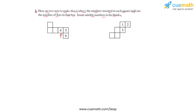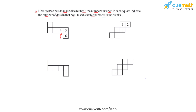We'll consider these nets and understand how they are folded to form cubes, so as to understand which would be the opposite faces of each other. Let us first consider this particular net and use the example of a cube-shaped room — with four walls, a floor, and a ceiling — to understand which face would be opposite the other.